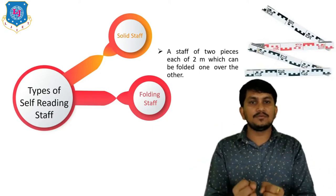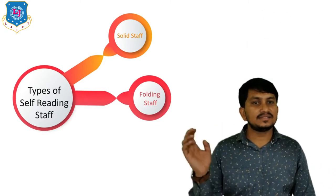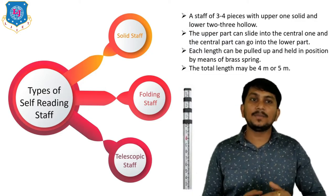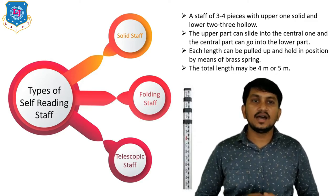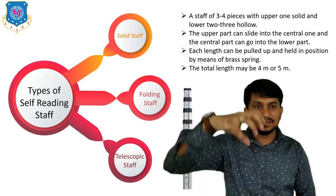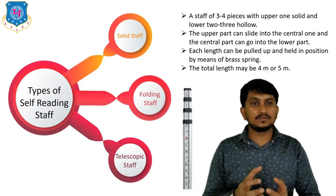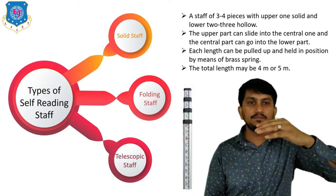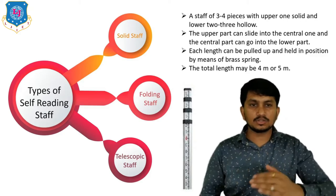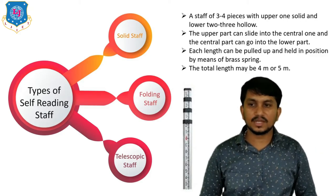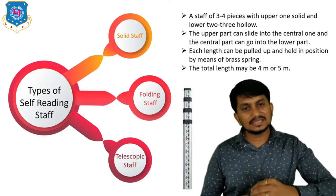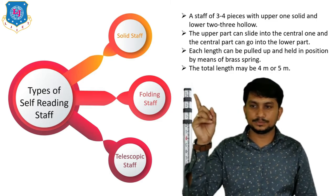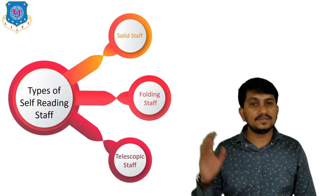The third type of self-reading staff is the telescopic staff — a staff of three to four pieces with the upper one solid and the lower two or three hollow. The upper part can slide into the central one and the center part can go into the lower part. Each section can be pulled up and held in position by means of a brass spring. The total length may be four to five meters.